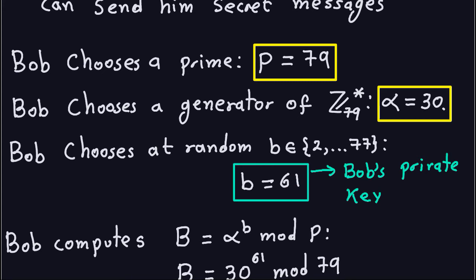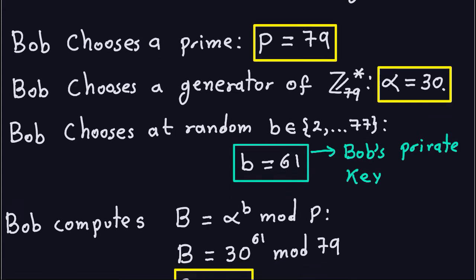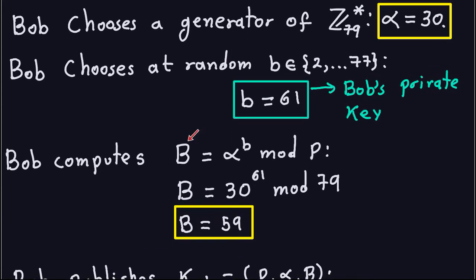Let's say that Bob chooses 61 to be his private key. Once he makes these three choices, he has to compute alpha to the exponent B modulo P — the generator to the randomly chosen exponent modulo the prime. In this case, alpha is 30, B is 61, and the prime is 79. Doing this modular exponentiation gives you 59.